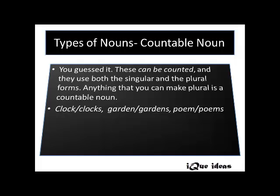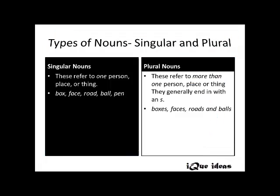The next type is countable nouns. These can be counted and use both the singular and plural forms. Anything that you can make plural is a countable noun. For example, clock can be made into clocks, garden into gardens, poem into poems. Nouns are also classified into singular and plural.